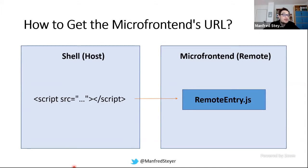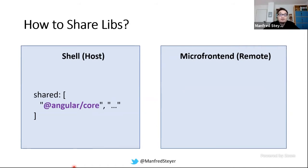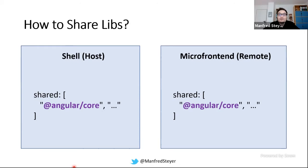After loading this remote entry point, the shell knows where to find the micro front-ends and how to fetch them. You can also share libraries — for instance, you could say you're sharing Angular core on both sides, meaning Angular core is only loaded once. It's not loaded twice if you have two micro front-ends, nor ten times if you have ten. This is a very powerful feature. And as you'll see, in the case of a version conflict, there are several strategies in Module Federation for dealing with them.